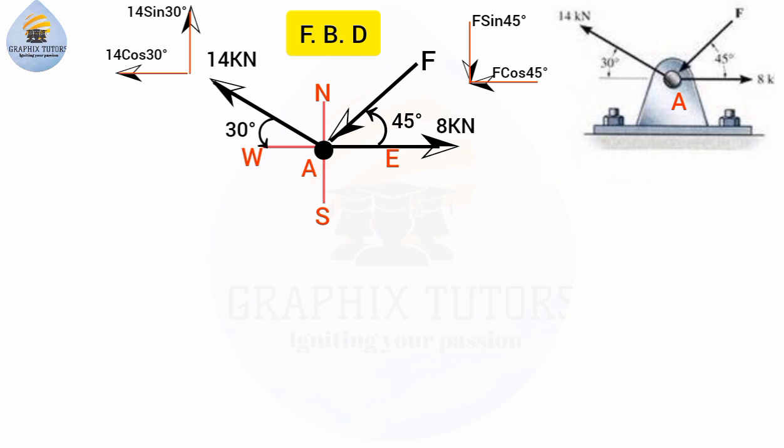Recall the resultant force formula: R = √(ΣFx² + ΣFy²). We need to find ΣFx and ΣFy. Summation of Fx means the addition of all forces acting along the x-axis, or the addition of all horizontal components. Summation of Fy means the addition of all vertical components, or all forces acting along the y-axis. Let's start with ΣFx — I'll call this equation one.